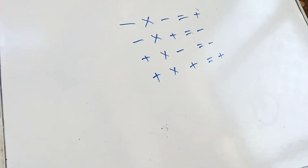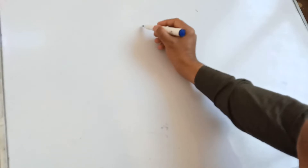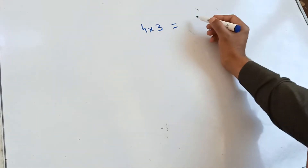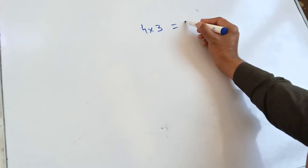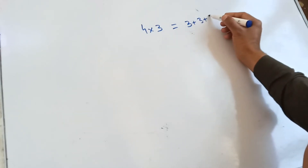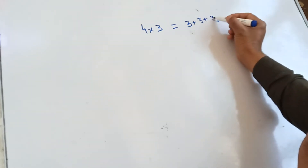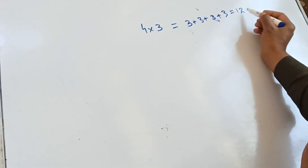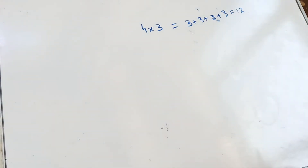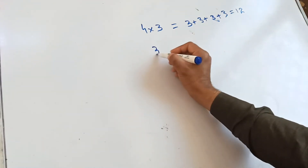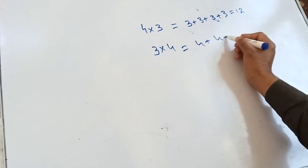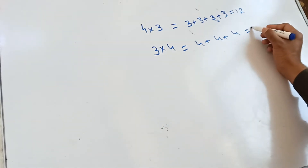Keep watching this video till the end. Viewers, do you know that multiplication works just like addition? For example, 4 times 3 means that 3 is added 4 times. That is why we write 12, because 3 plus 3 plus 3 plus 3 makes 12. Similarly, 3 times 4 means 4 added 3 times: 4 plus 4 plus 4, which is again 12.